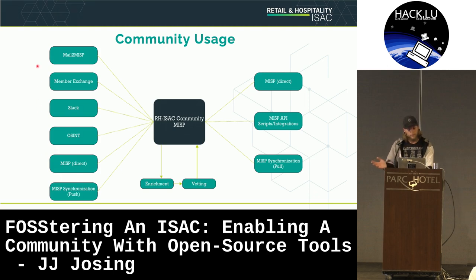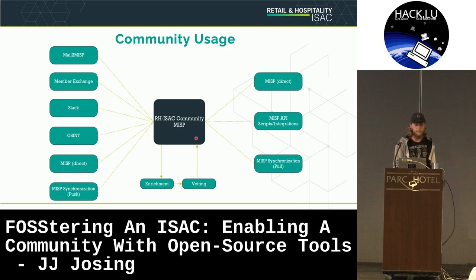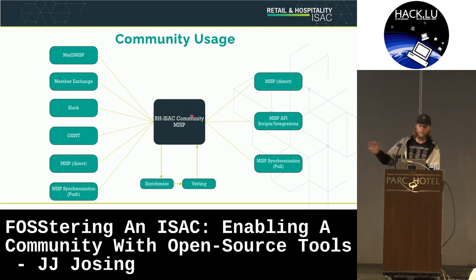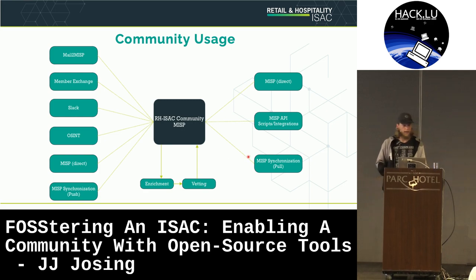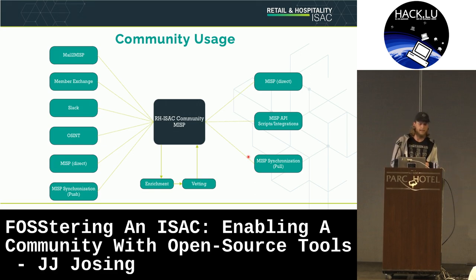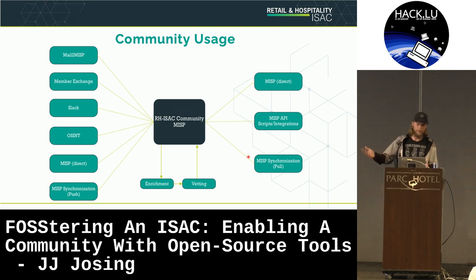On the left-hand side are all the sources where intel in our community can originate from. Regardless of where it's being shared, it gets pulled into our community MISP instance in the middle. Our enrichment and vetting process is run on all the intel, pushed back into MISP, and then made available for dissemination through different avenues on the right — whether that's logging directly into MISP to search for an indicator, automation via the API through scripts or integrations, or members that run their own MISP instance and get the intel through MISP synchronization.